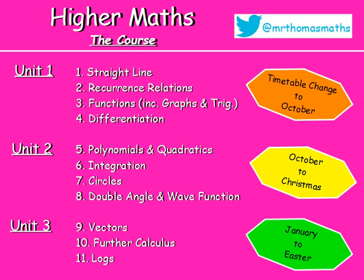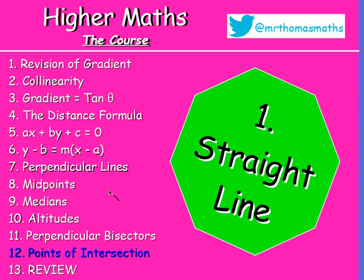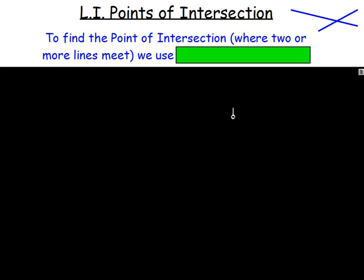Welcome to almost the last lesson in this straight line chapter. After this there is just the review lesson, which is just a recap of everything from the straight line chapter. Moving on to points of intersection — it's the last lesson with anything new. In this straight line chapter, if you've got two straight lines and they cross at a point, this point is known as the point of intersection.